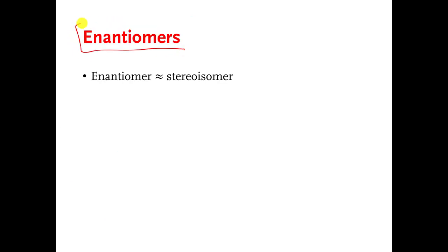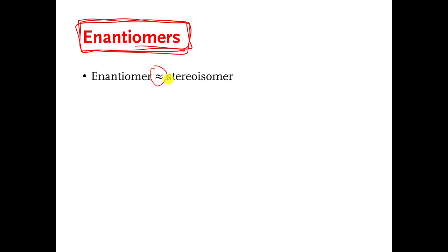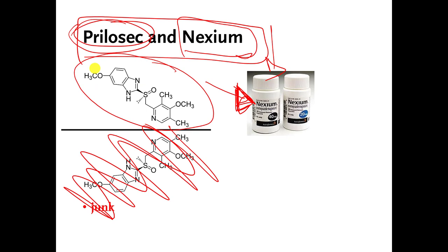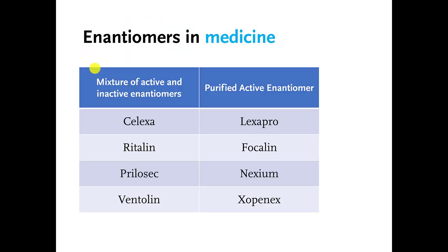There is another word I want you to know: enantiomer. Enantiomer basically means the same thing as stereoisomer. There is a subtle difference between the two, but as far as we are concerned, if I say enantiomer, that means non-identical mirror images — it means stereoisomer. The Prilosec-Nexium story is not the only example. There is a drug called Celexa, which is an antidepressant, and it has two stereoisomers in it. One of them is effective for treating depression and the other is not, and then there is another drug called Lexapro, which is basically Celexa with the useless stereoisomer thrown away.